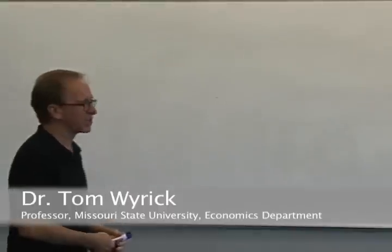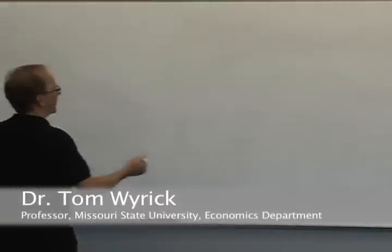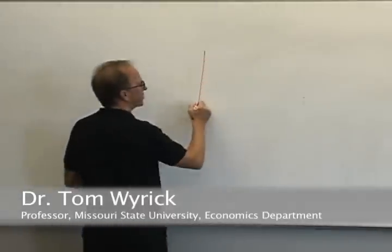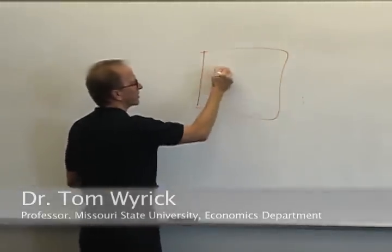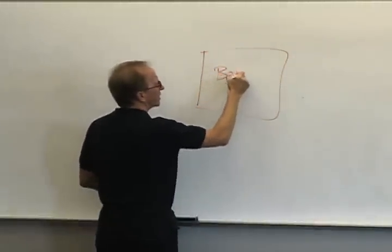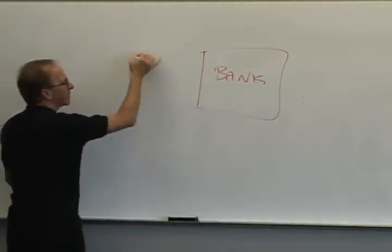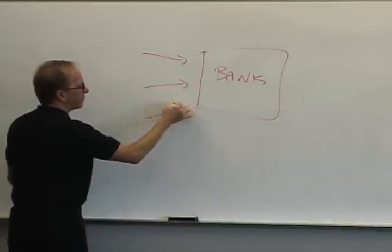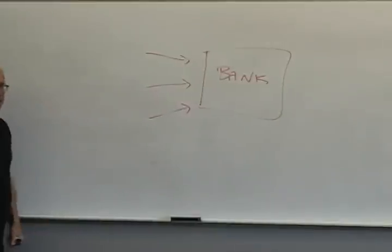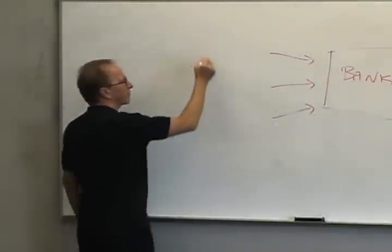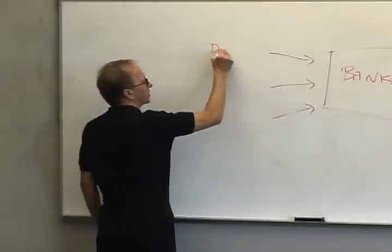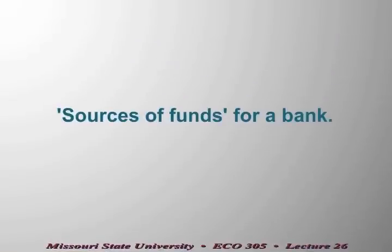We want to pick up our discussion where we left off last time. We were talking about the bank and its sources and uses of funds, just the typical bank. Banks gather funds from three places. The first is deposits, and this is not only first, but it is the most important source of funds for banks.